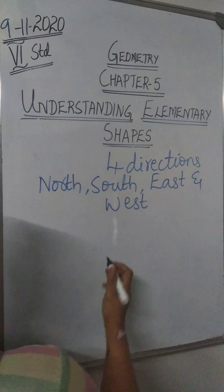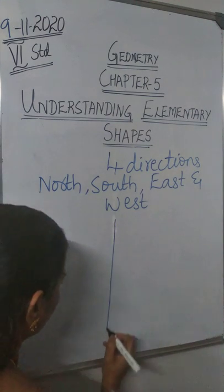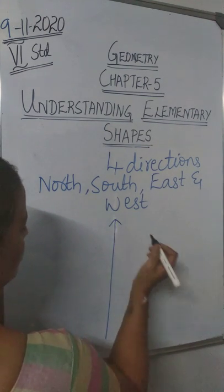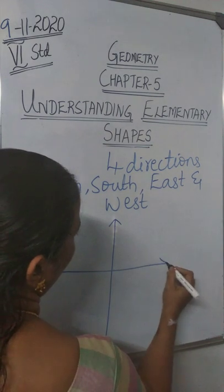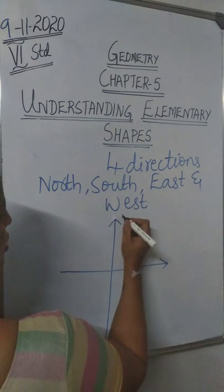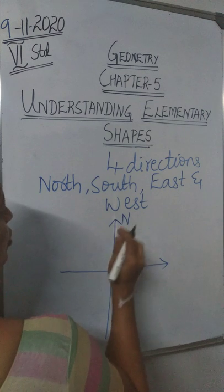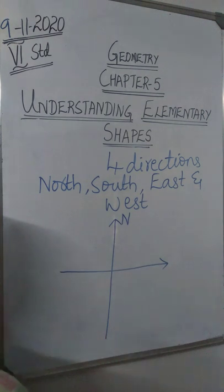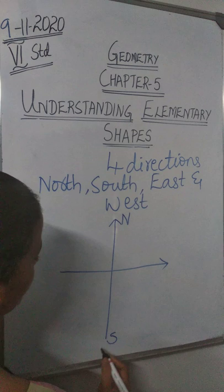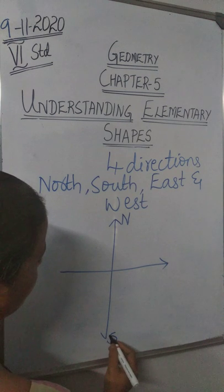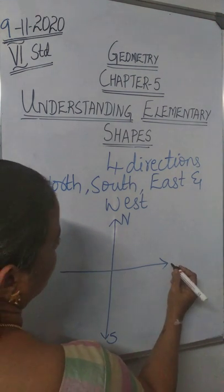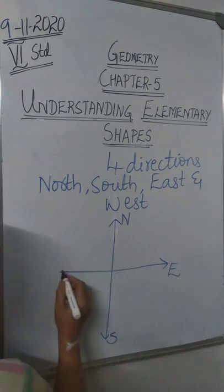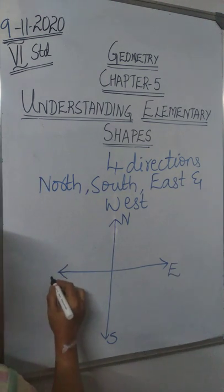Now, let me draw this. Can you tell which direction is this? It is north. Which direction is opposite to north? It is south. Now, which direction is this? This direction is east and this is west.